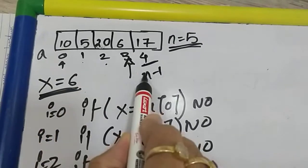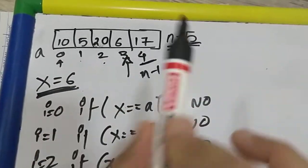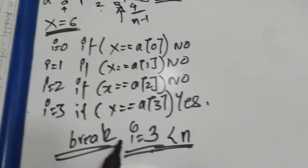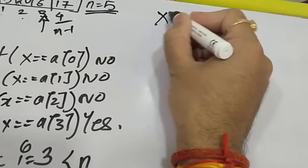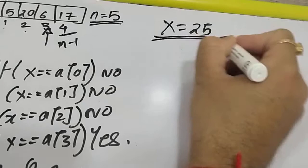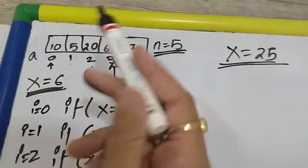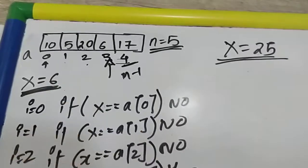Now suppose I am looking for element 25. I want to find whether 25 is present in this array or not. Obviously we can see it is not there, but how will my machine understand? Let us see.